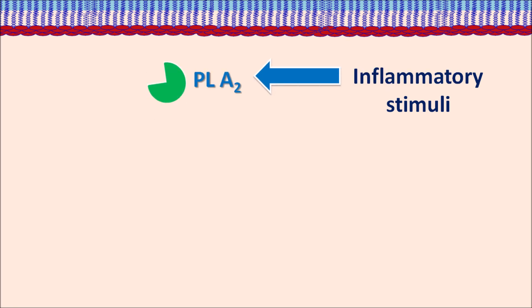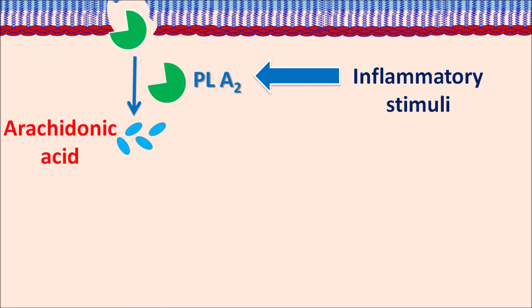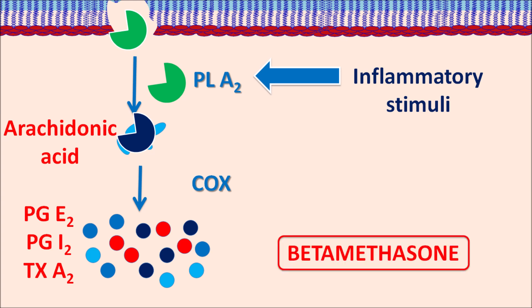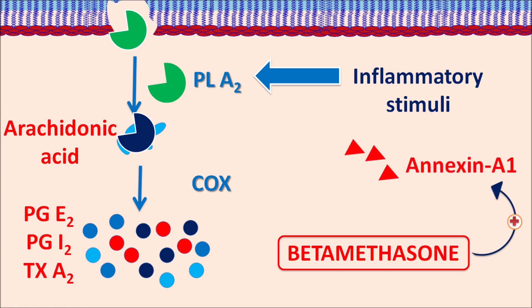When there is an inflammatory stimulus, it stimulates the release of phospholipase A2, a cleavage enzyme that cleaves phospholipids, releasing mediators such as arachidonic acid. This arachidonic acid is a C20 fatty acid that is converted via the COX pathway into inflammatory mediators such as PGE2, PGI2, and thromboxane A2. Betamethasone can control this pathway by inducing the formation of annexin A1, which inhibits the activity of phospholipase A2, so that prostanoids are not released and inflammation is controlled.